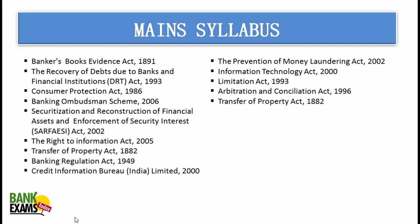Right to Information Act 2005, Transfer of Property Act 1882, Banking Regulation Act 1949, Credit Information Bureau (CIBIL) 2000, and Prevention of Money Laundering Act 2002 are also covered. Money laundering means converting black money into white money - concealing tax payment from the government. You need to understand what transactions are identified as money laundering under PMLA 2002, so as a law officer you can take proper action. Information Technology Act, Limitation Act, and Arbitration and Conciliation Act are also important - arbitration is a less time-consuming dispute resolution process compared to courts.